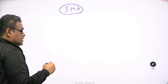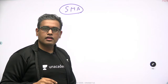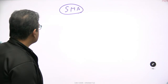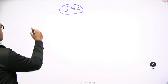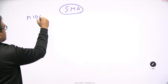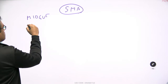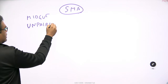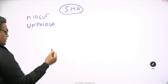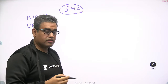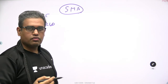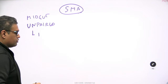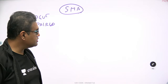We have seen that the celiac trunk was supplying the foregut. The superior mesenteric artery is supplying the midgut — so it is basically an artery of the midgut. Obviously it is also an unpaired artery because we only have one midgut. The superior mesenteric artery arises at the level of the transpyloric plane, which is the lower border of L1, so we can roughly write L1.